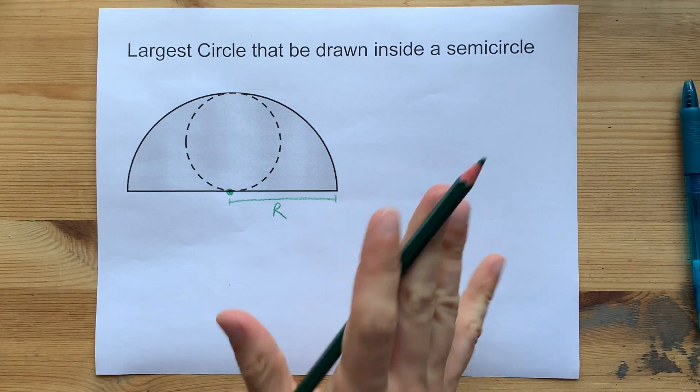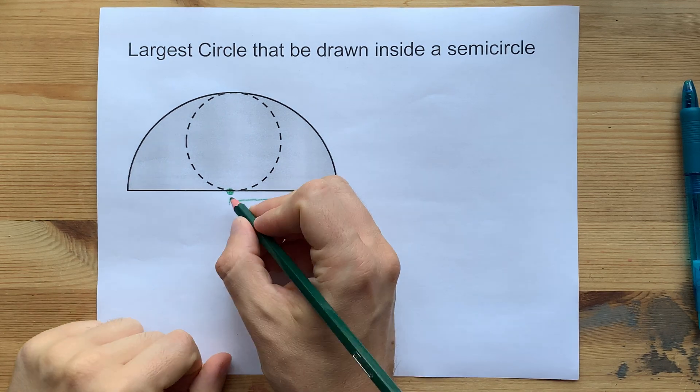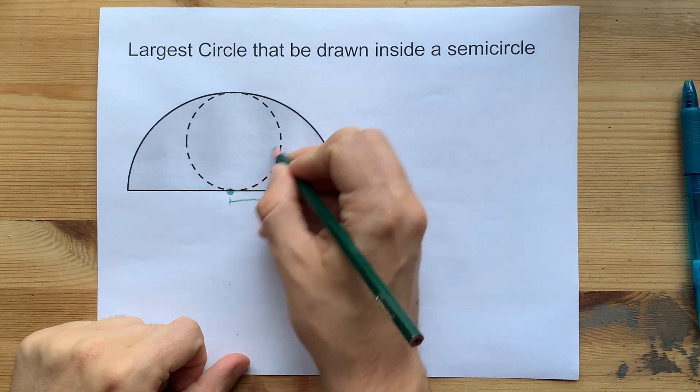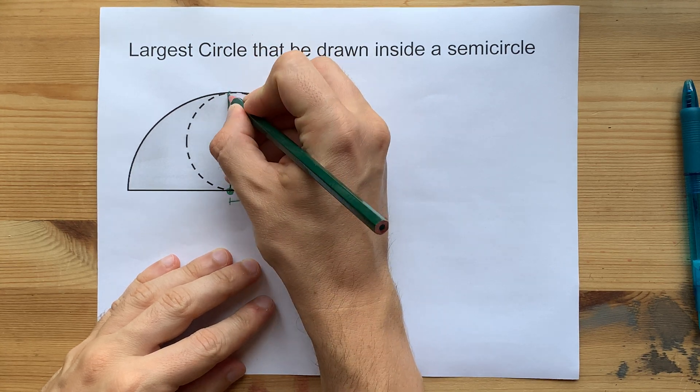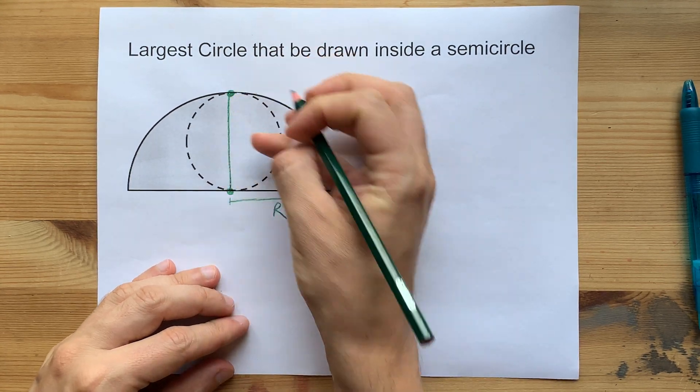By definition, it's the same distance from the center to any point on the semicircle, including this point at the very top.